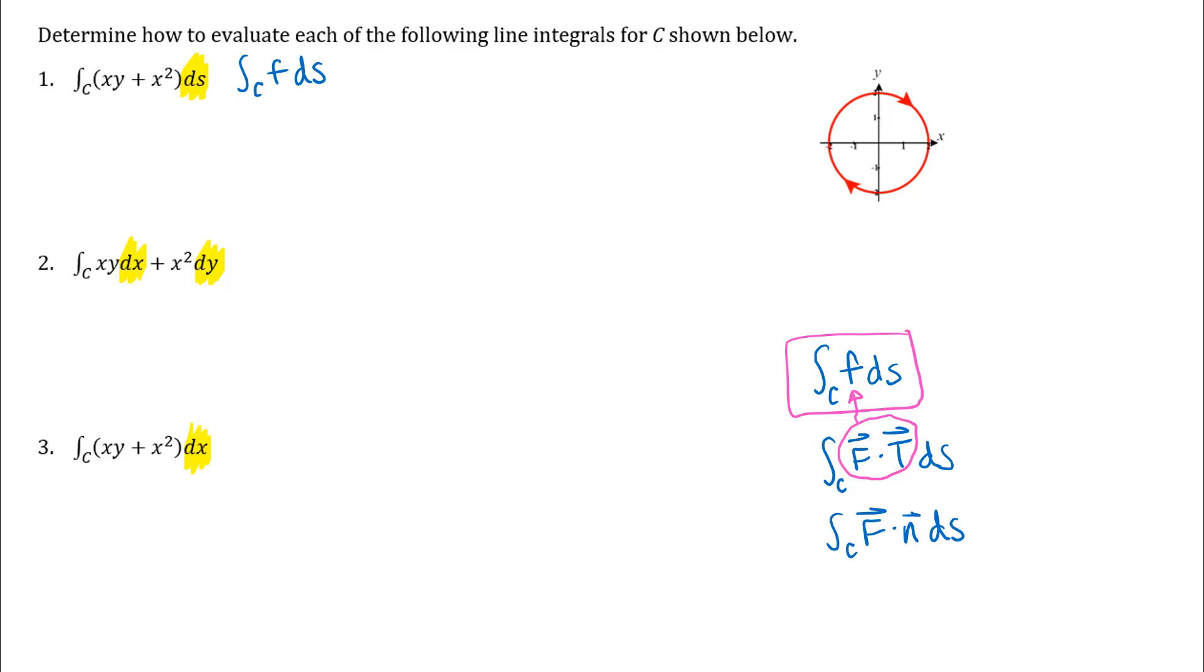One other thing about these examples that we're going to look at here is my curve. I just want to mention a couple of things about this curve. So I have a circle of radius 2 centered at the origin for my curve but you should notice the direction of the orientation on that. So it's easy to set up a parameterization that goes counterclockwise.